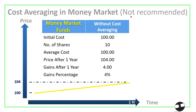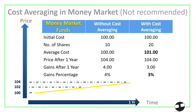We don't recommend cost averaging in money market funds because it can drag the performance of your investment. If you did apply cost averaging and bought 20 shares in different time intervals — first 10 shares at 100, second 10 shares at 102 — your average cost goes up to 101. You're buying additional shares more expensively than your initial price of 100.